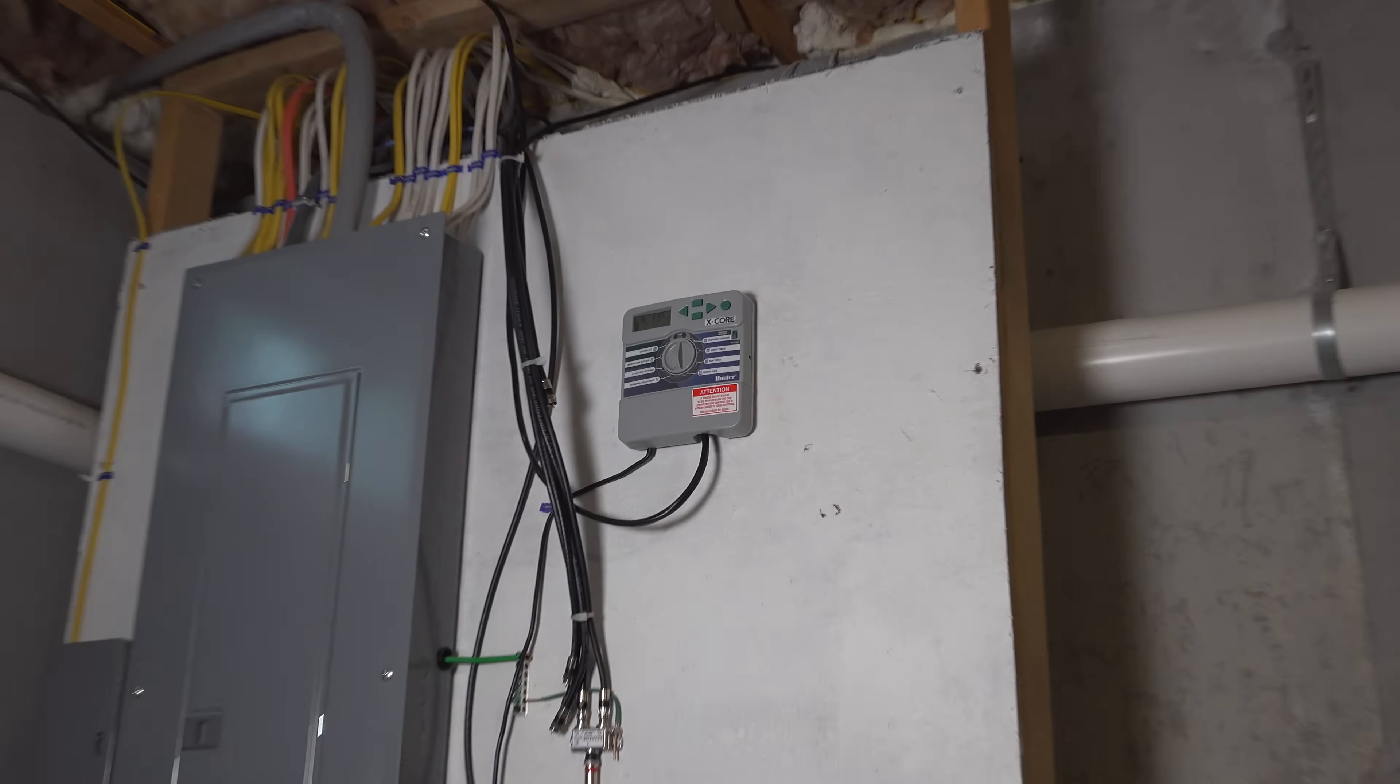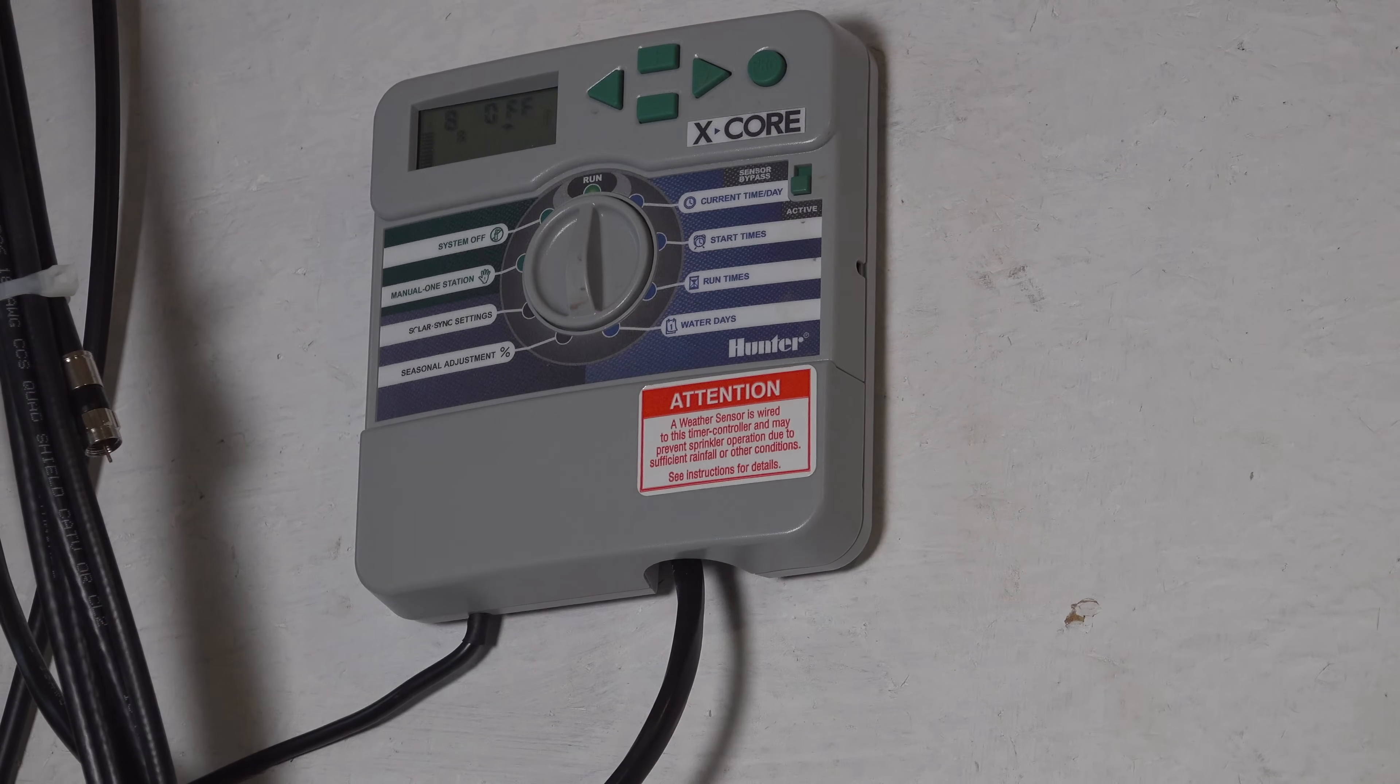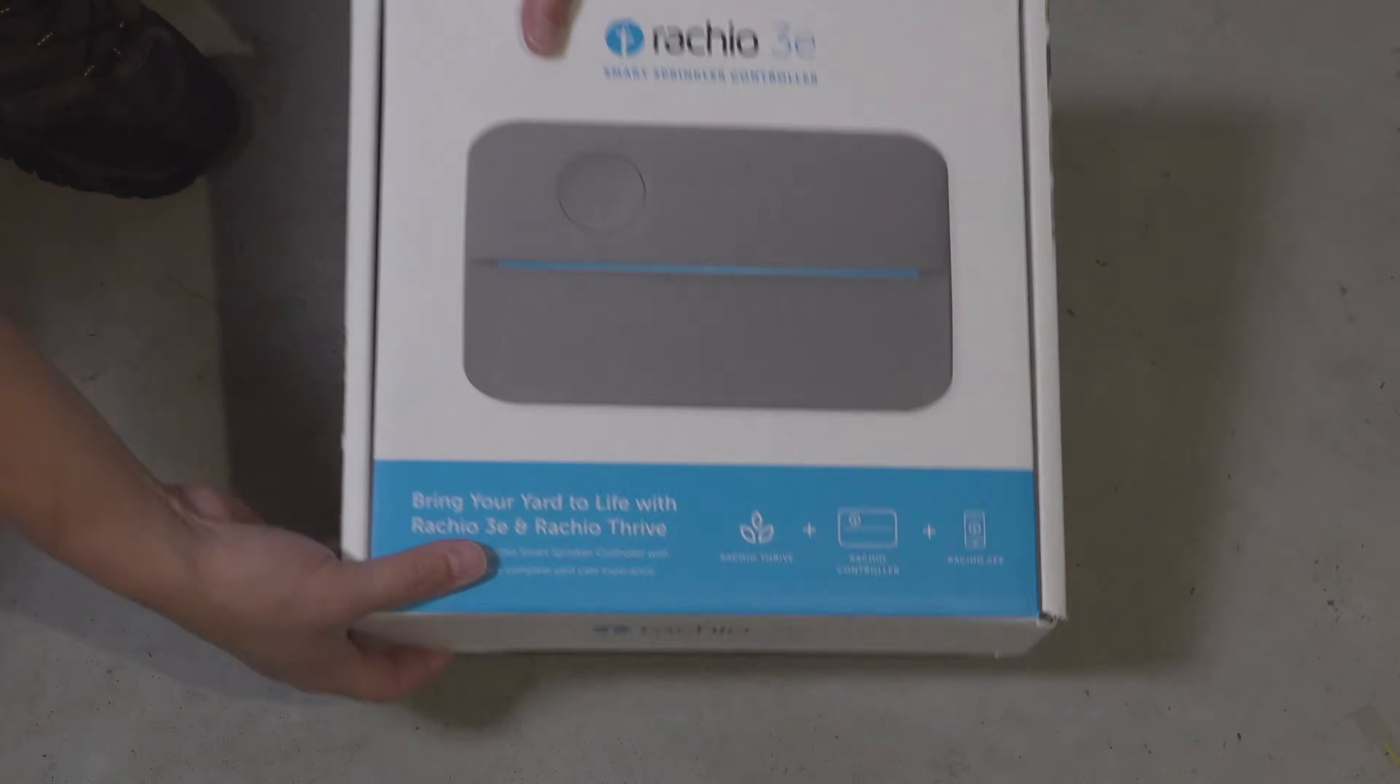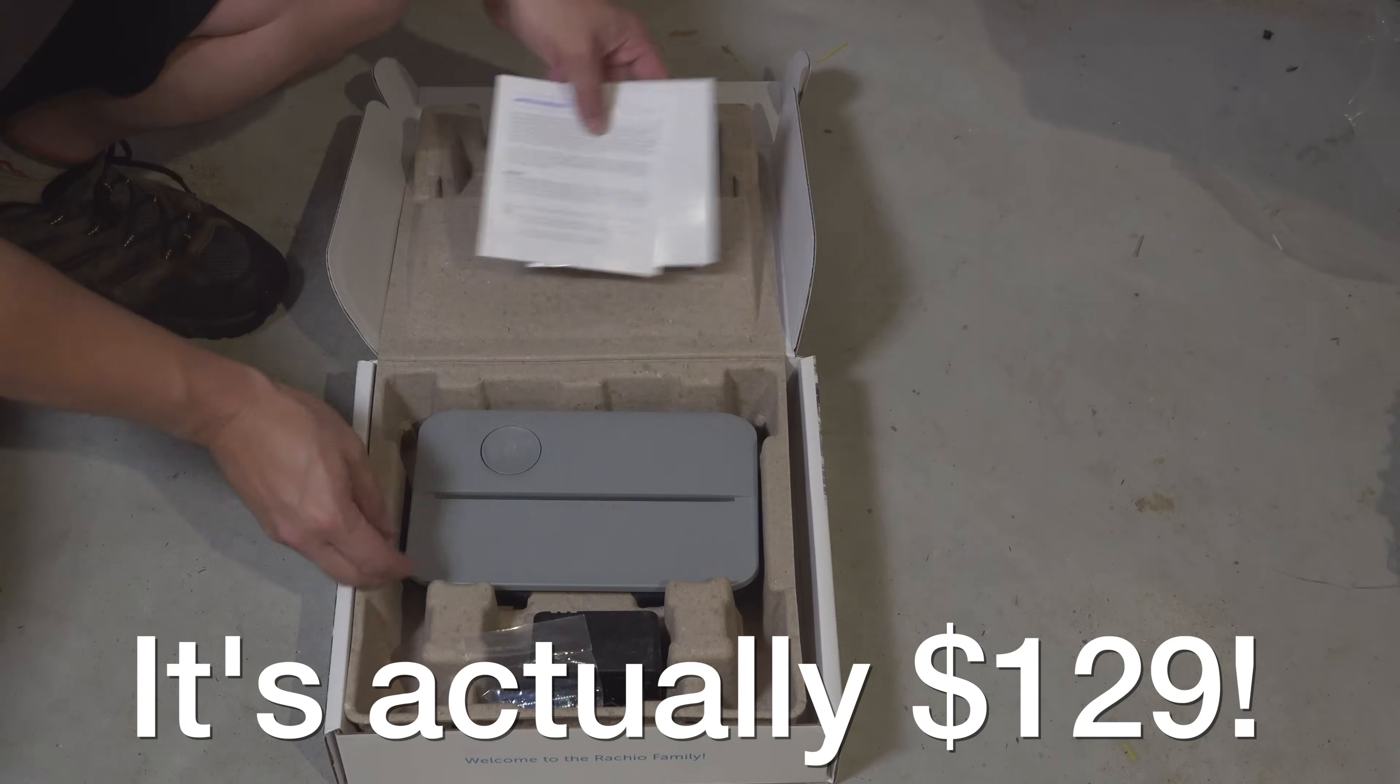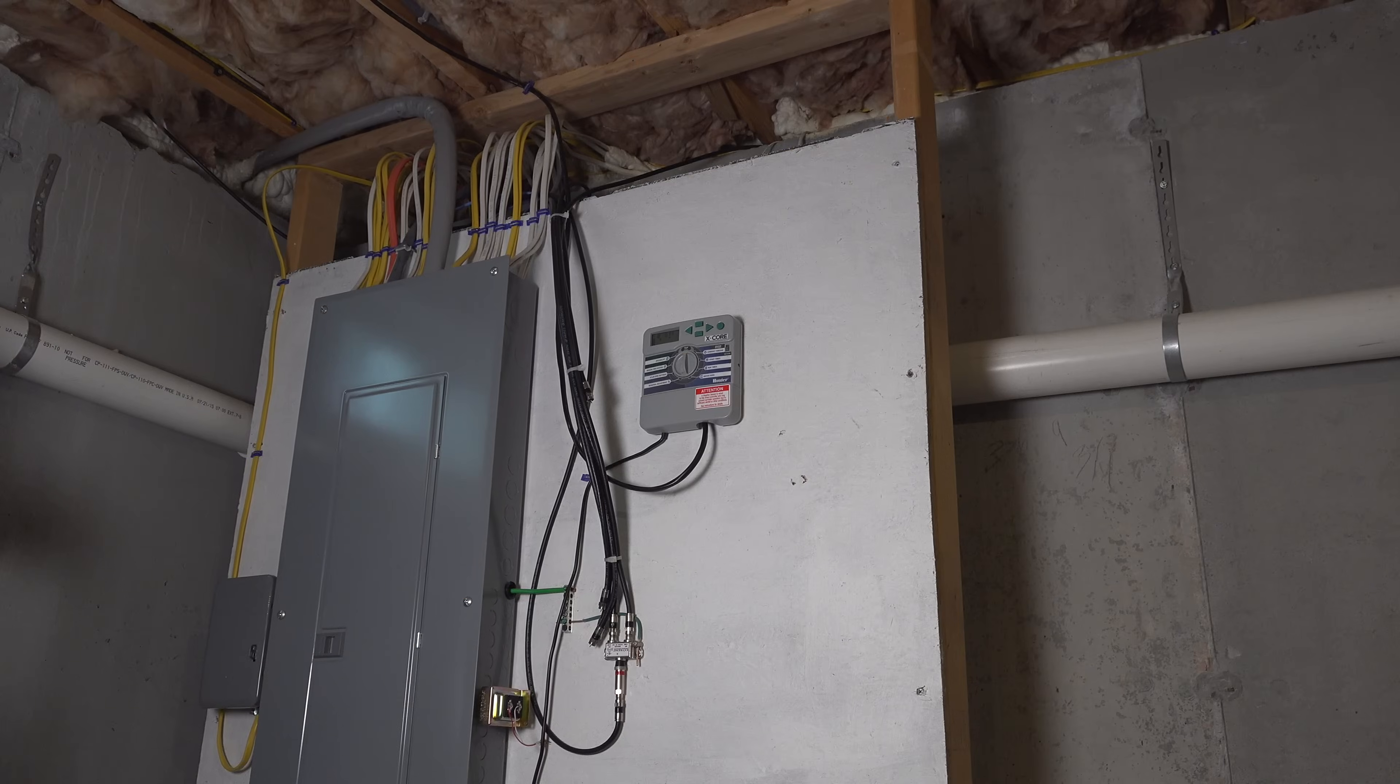Here's his existing system. Now this is very common. It's made by Hunter, and it's capable of running up to eight zones. And here's our Rachio controller. This is their Model 3E. It costs about $150, and you get everything you'll need for the installation right inside the box.